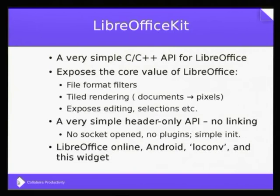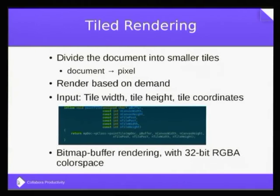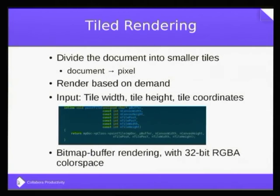Let's talk a bit more about tile rendering — what exactly it is. Tile rendering is like converting your document into pixels. The LibreOffice Kit API exposes this functionality so you can access the whole document in the form of tiles and pixels, then show these pixels on the front end as a complete document. The main function responsible for tile rendering accepts the coordinates of the tile you want LibreOffice Kit to render for you, and it gives you a bitmap buffer with 32-bit RGB color space.